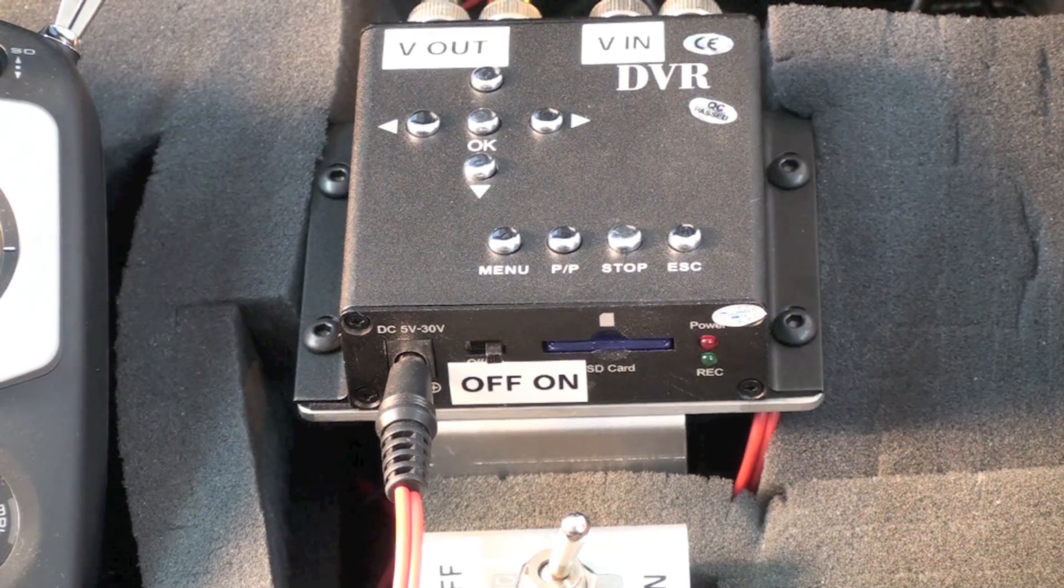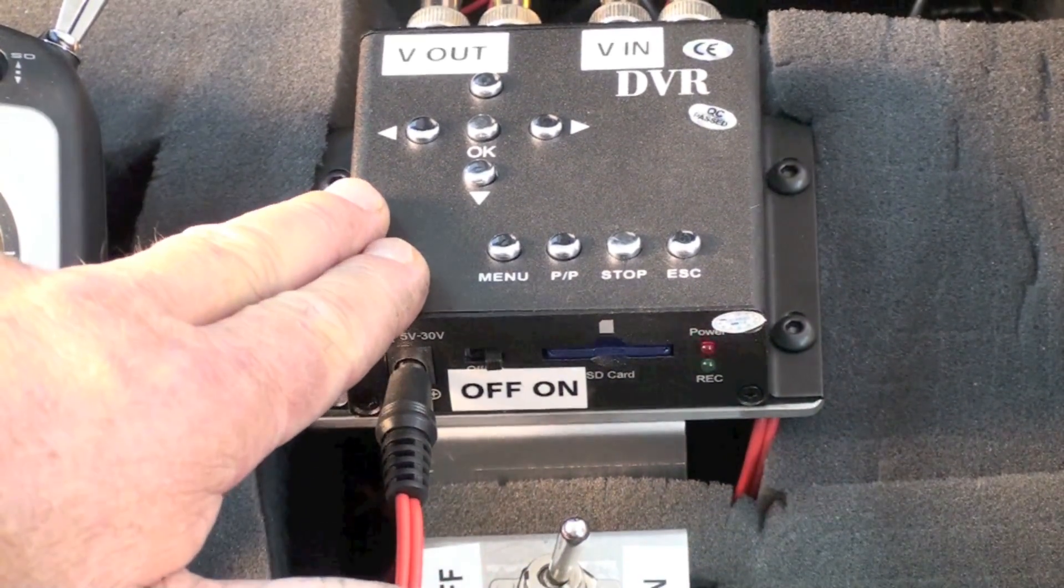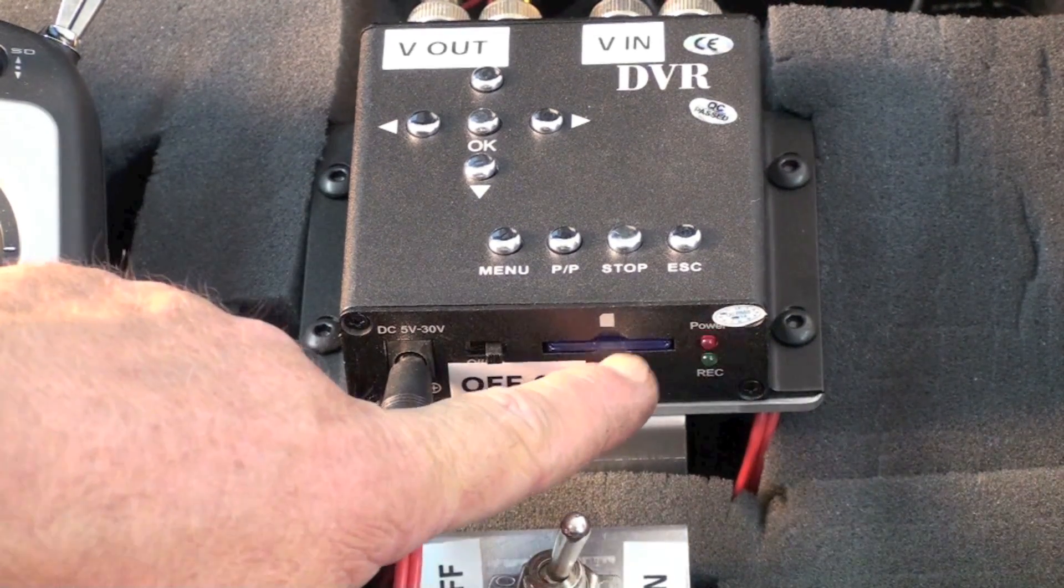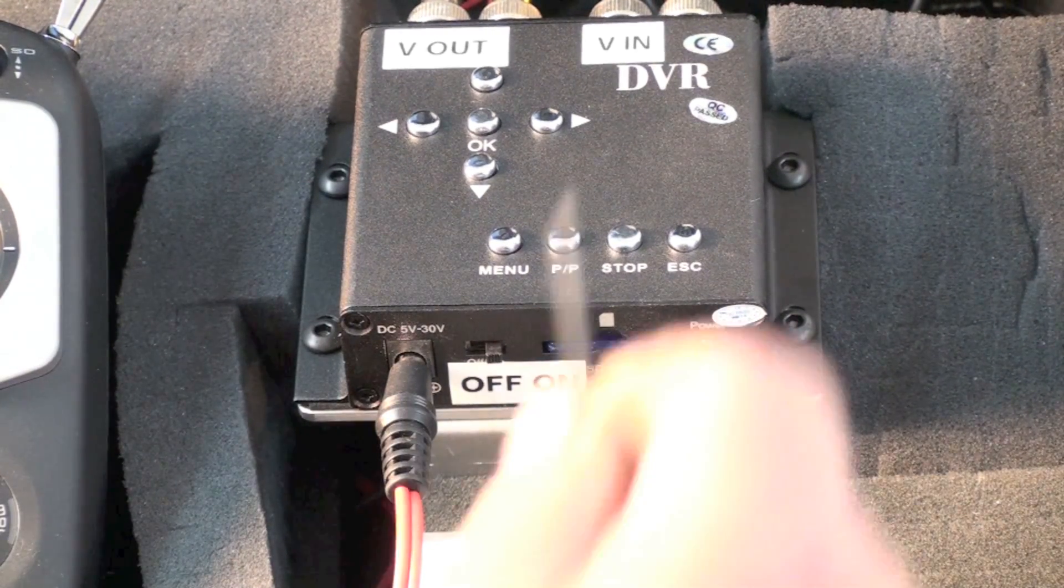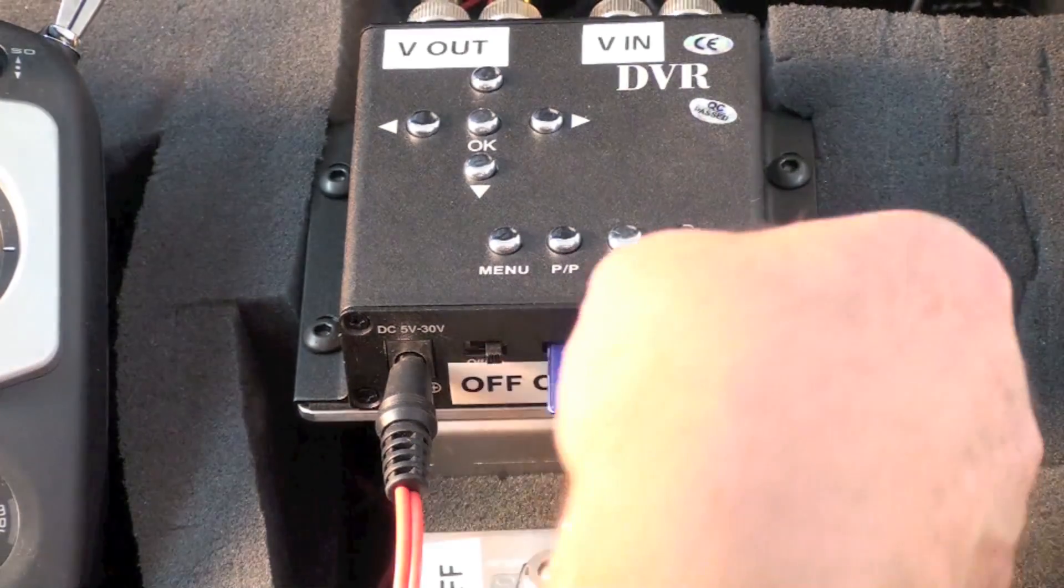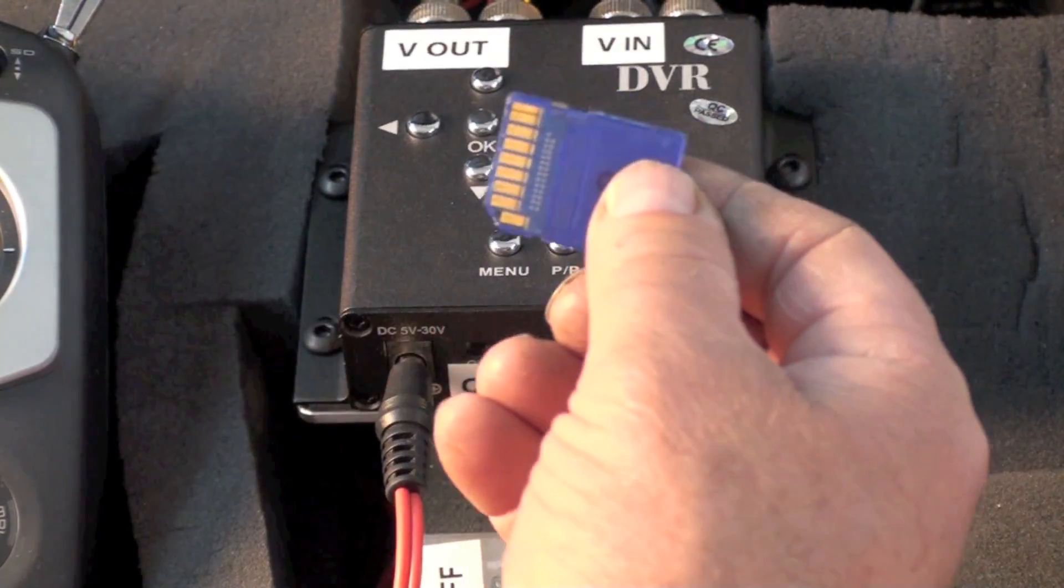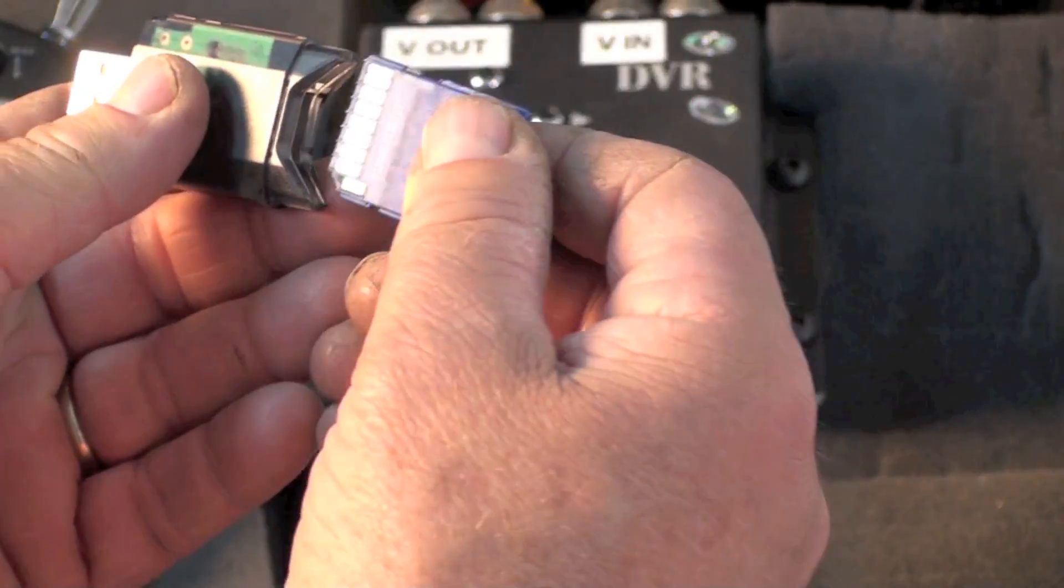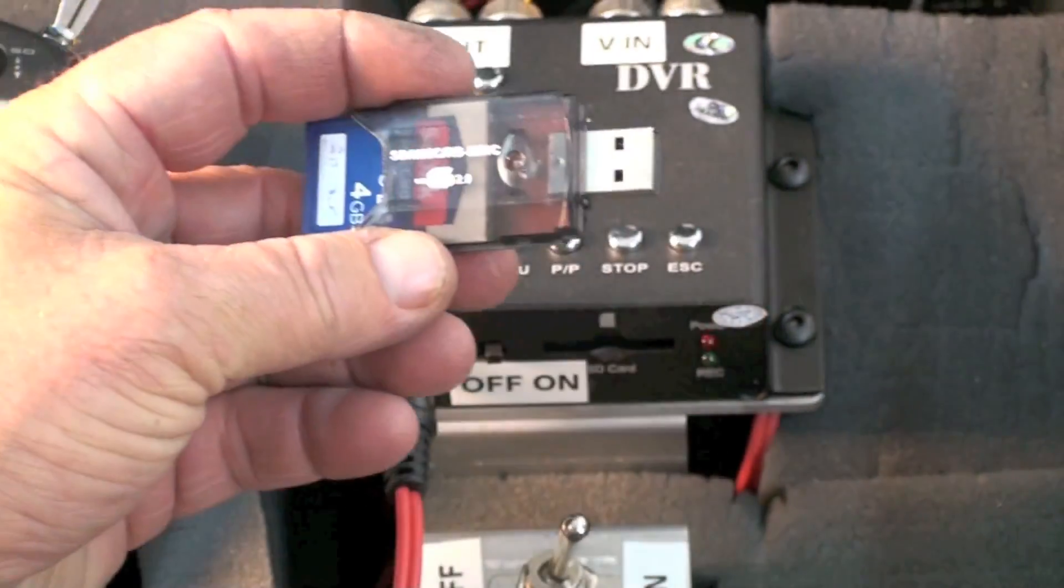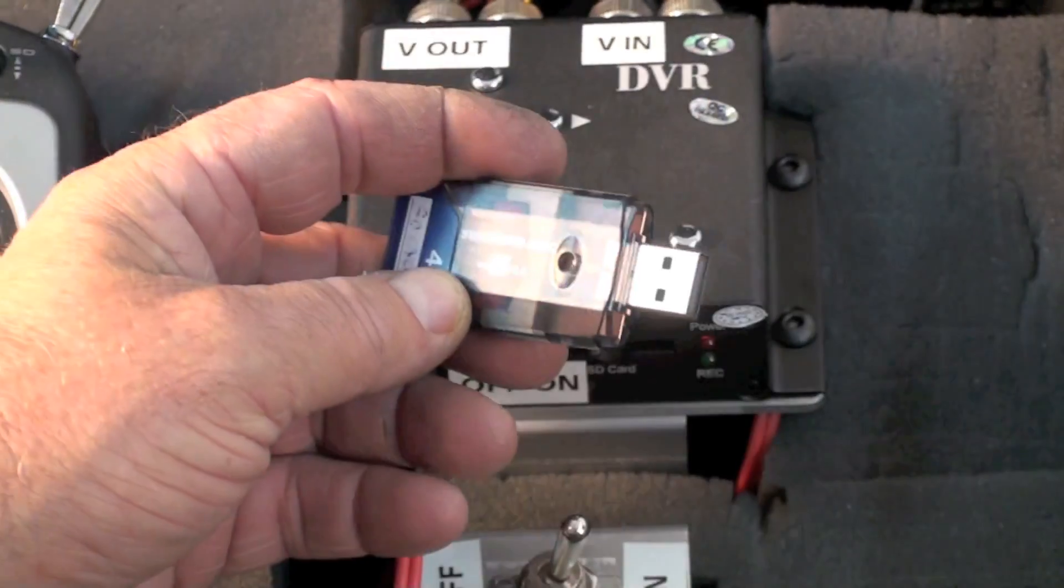To record stills you would simply record a section of video on the DVR and then it gets recorded to the SD card here. When you're done recording you pop this out and then you can take it to your computer and convert it from a video to a still using this little card reader. Plug it into any USB port.